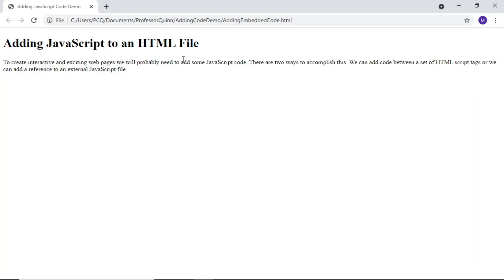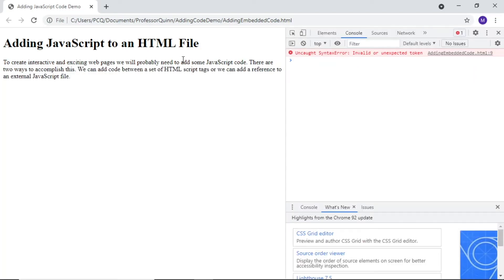No alert message means that the code did not run correctly, so let's open the console with Control, Shift, and J.